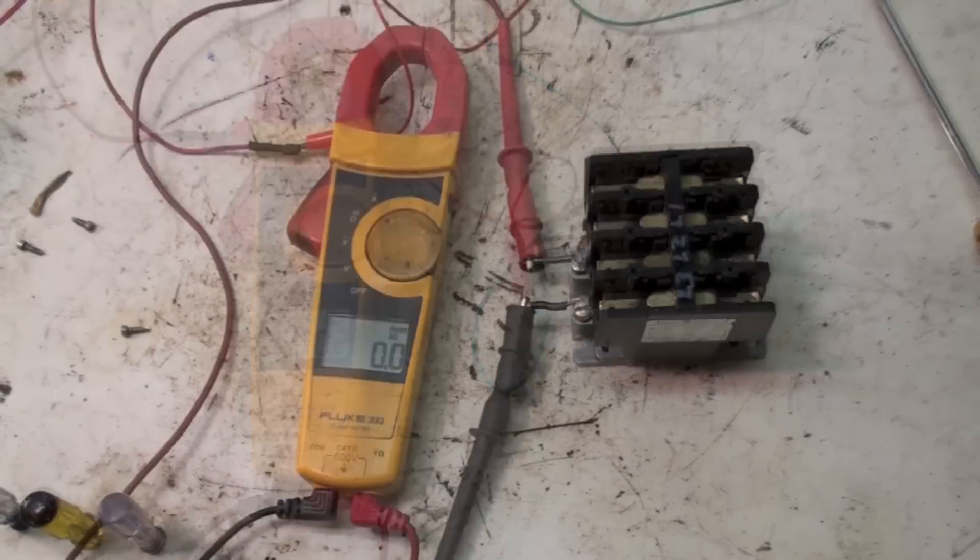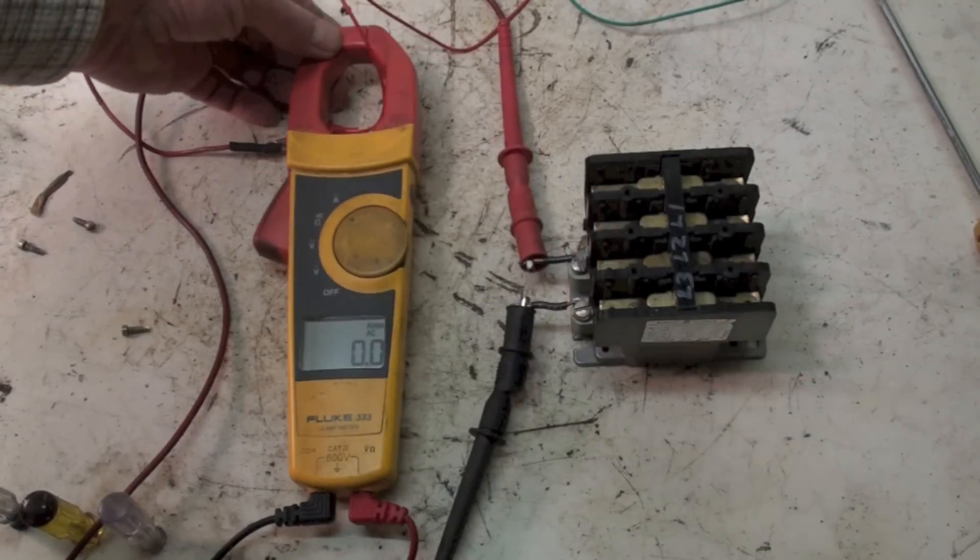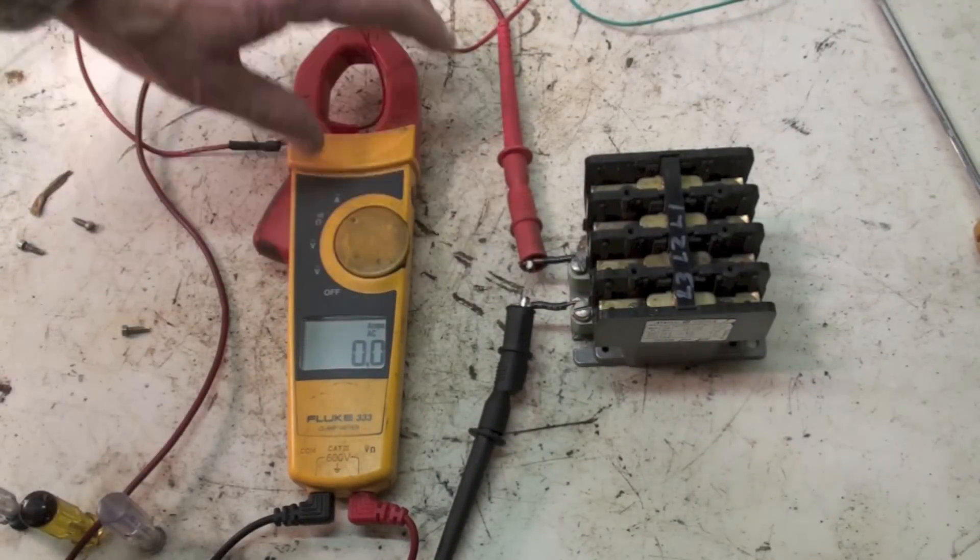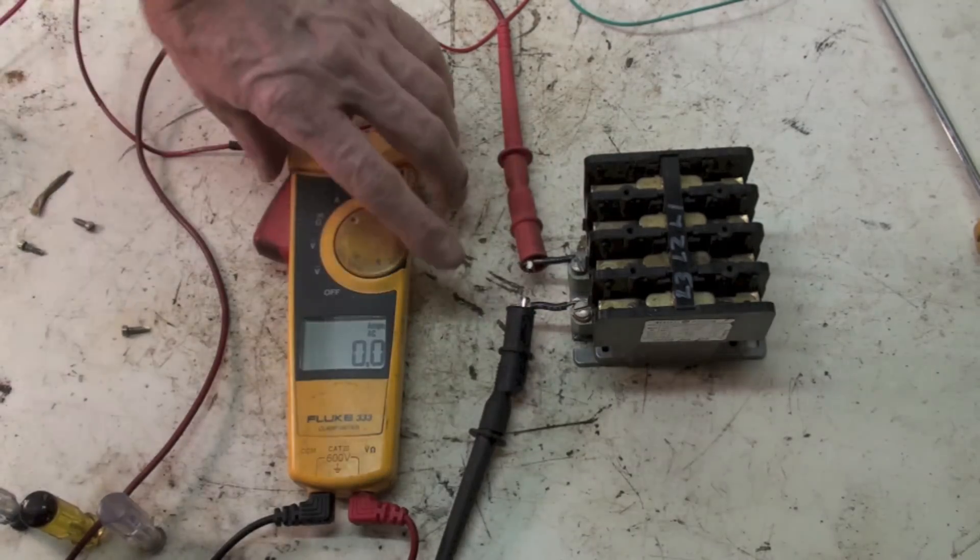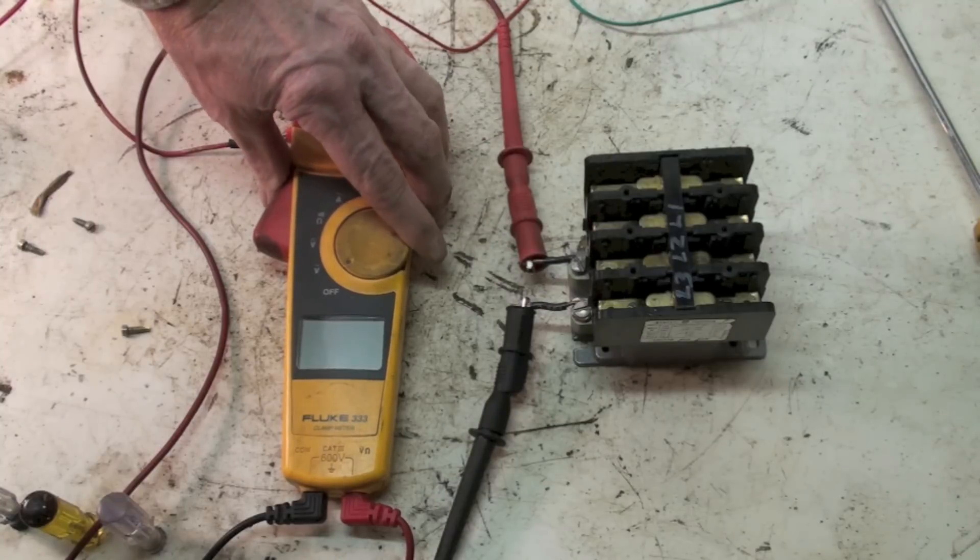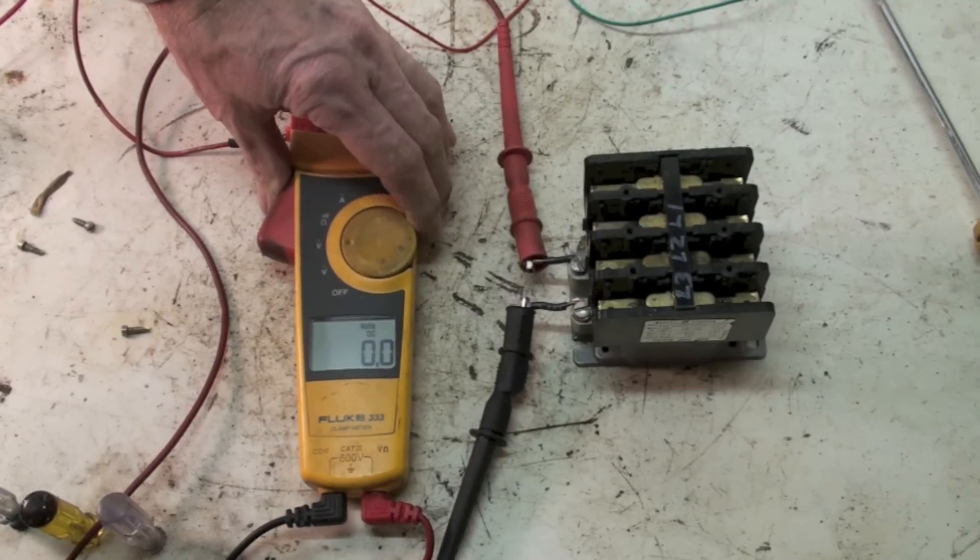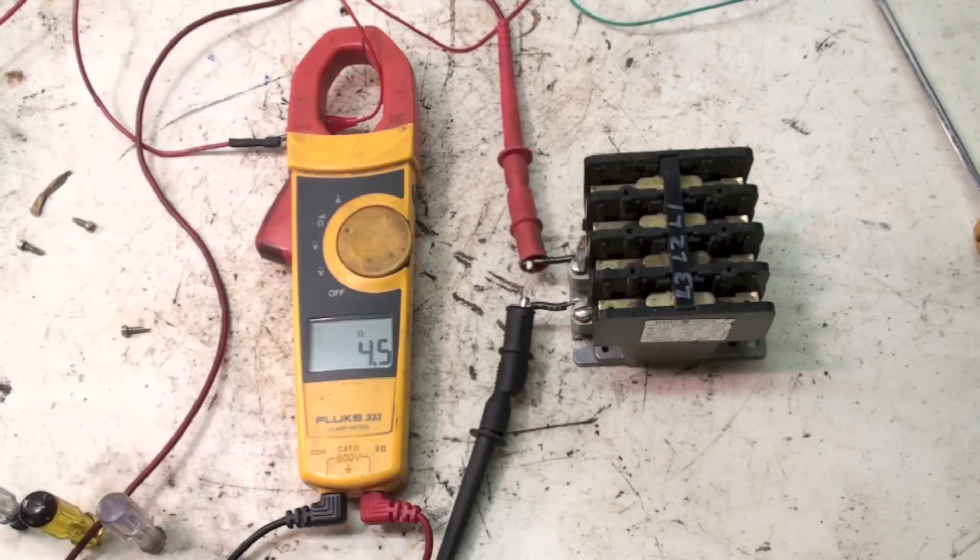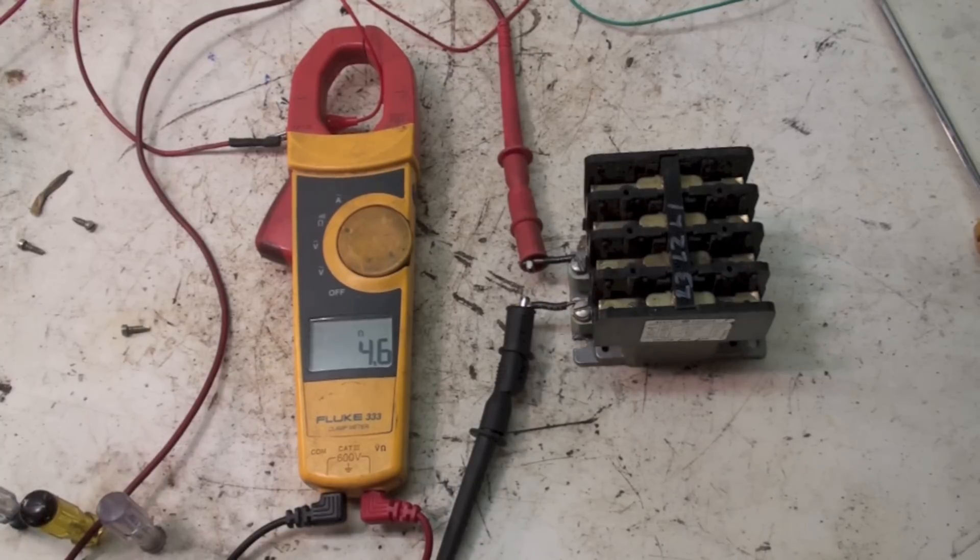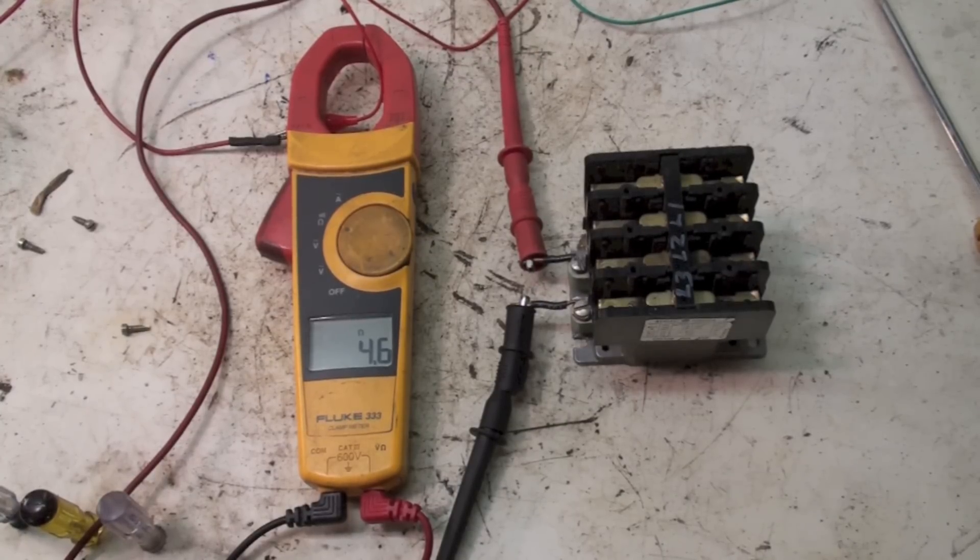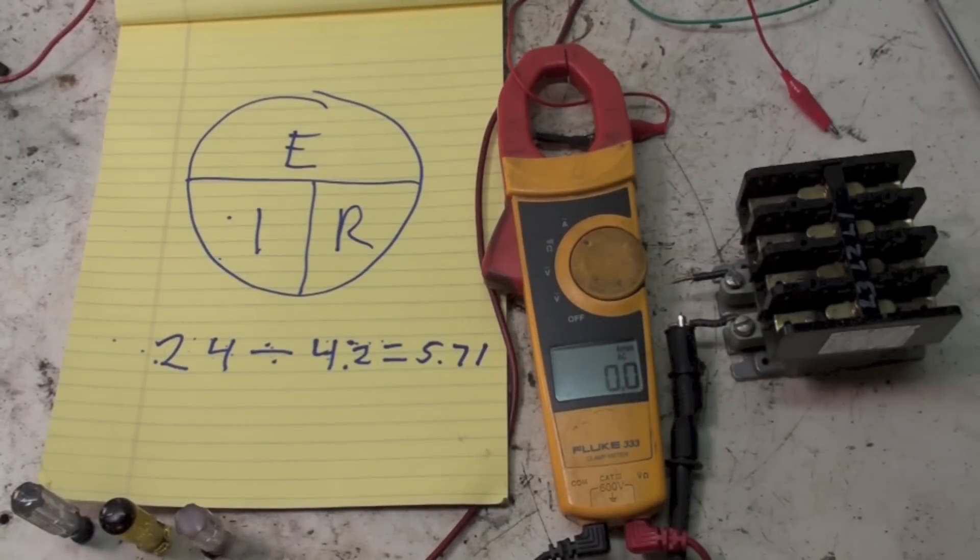Let's do an ohm check on this thing. If you look at this thing I'm in amps right now, I'm going to turn it to ohms and we will get a resistance. 4.6 ohms. I'm going to do Ohm's law with this thing and it's not going to make any sense.